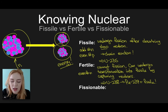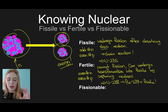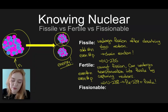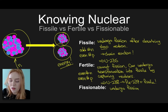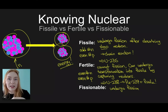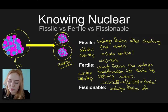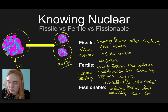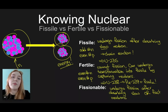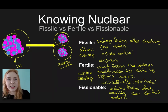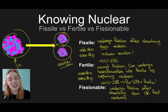Fertile nuclei typically have even numbers of neutrons and even numbers of protons. The last category is fissionable materials. Fissionable materials can undergo fission after absorbing slow or fast neutrons. In this sense, all fissile materials are fissionable, but not all fissionable materials are fissile. Now that we understand the difference between these three, we can use this to continue our knowledge of nuclear energy.